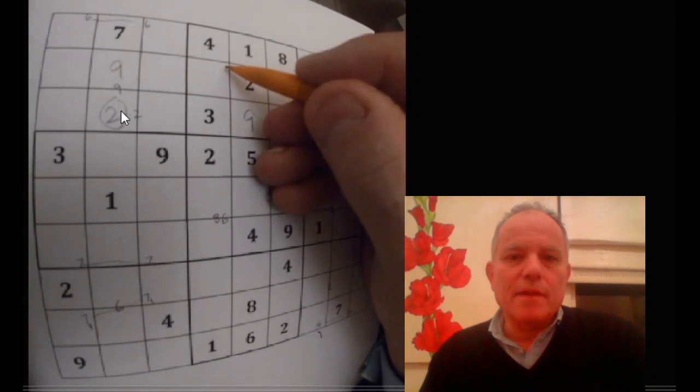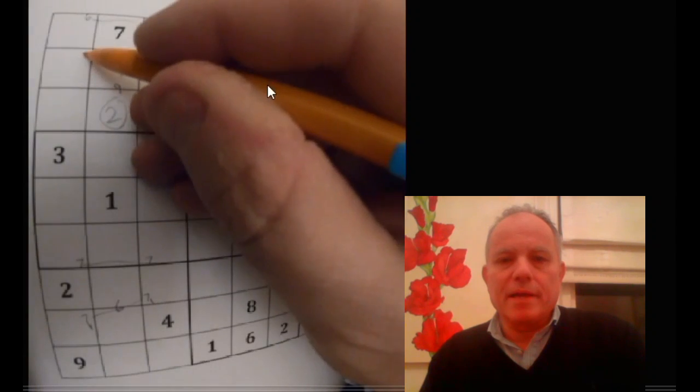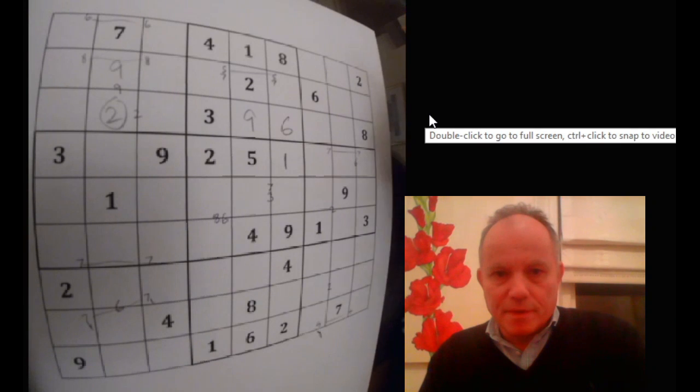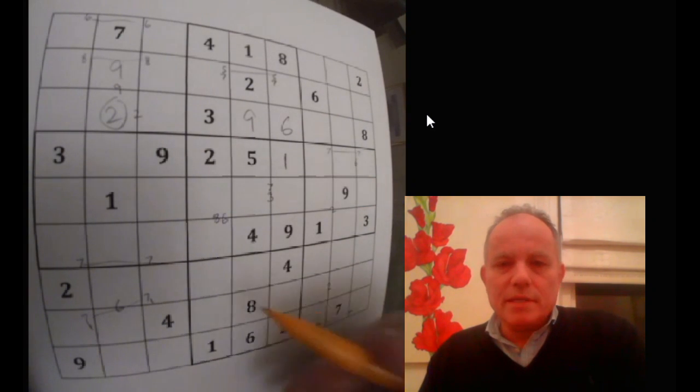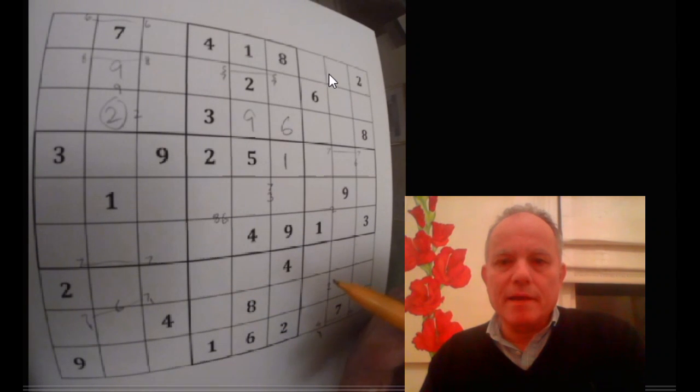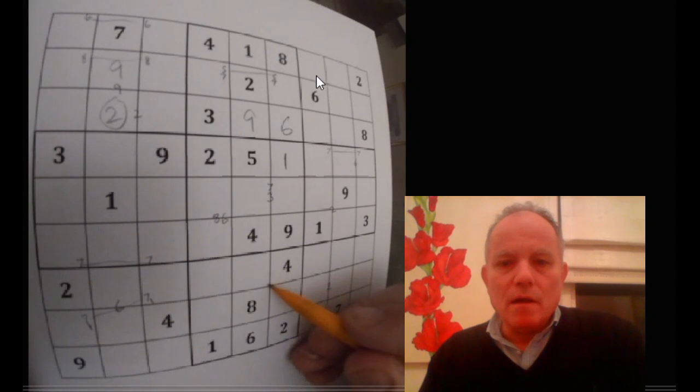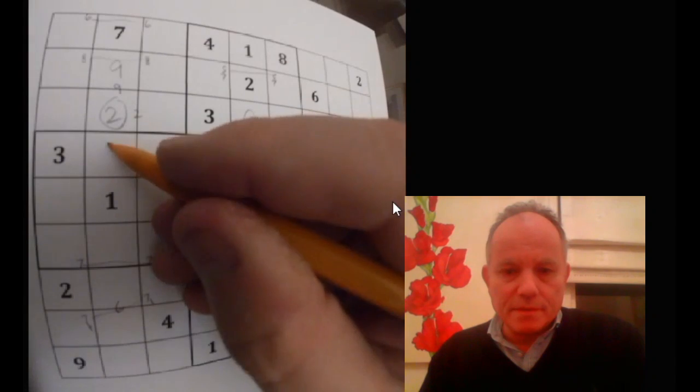This two up here could go either there or there, and I've guessed that it goes there and I'm seeing what follows. That pushes the nine up here, that puts the nine in that box there. You've now got a five-seven pair here. There's some quite interesting logic that gradually develops. It takes me a long time to spot that this pair up here must include a nine.